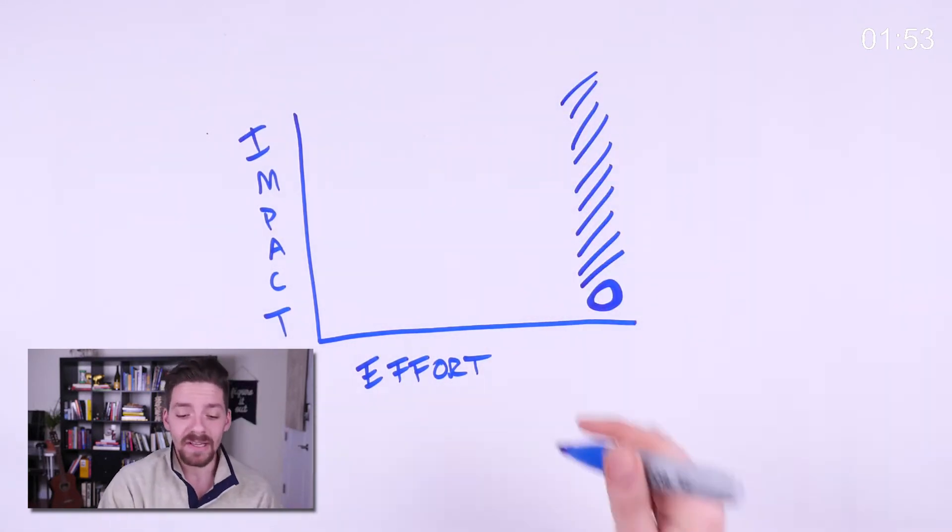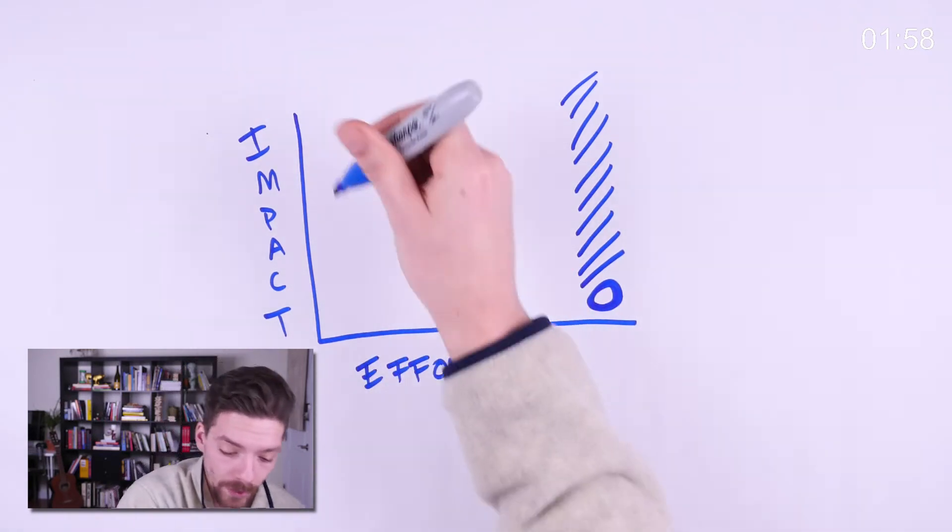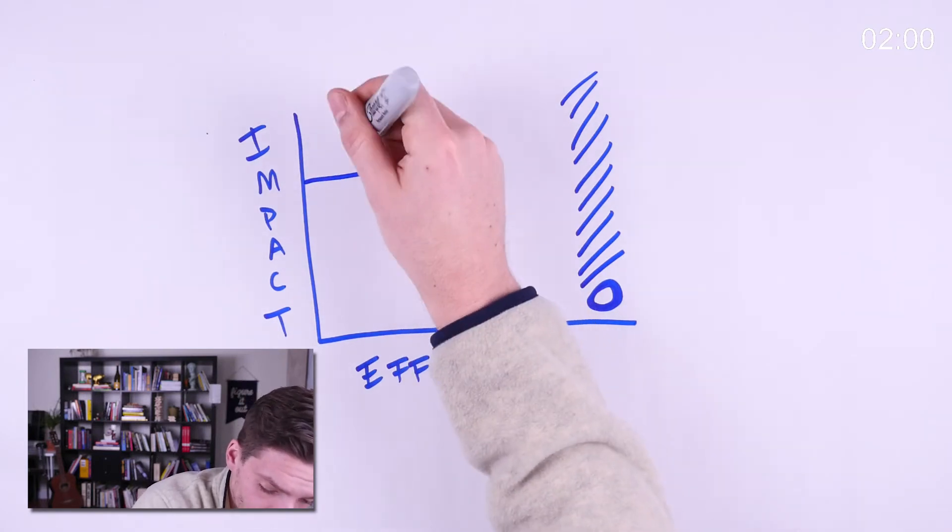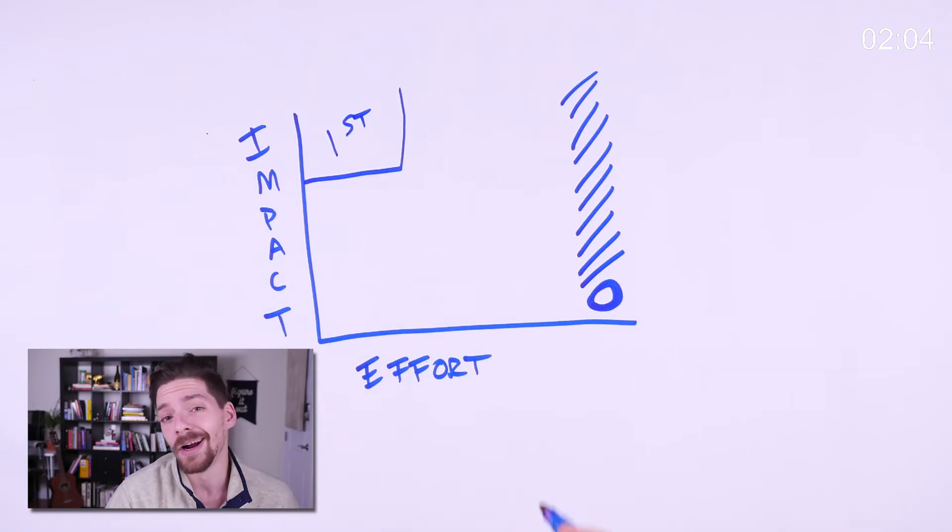But then there's things that are really impactful that might take very little effort, and that's in this quadrant over here. These are things that we usually look to do first, things that are really quick to do and we know that they're going to give us a high amount of impact.